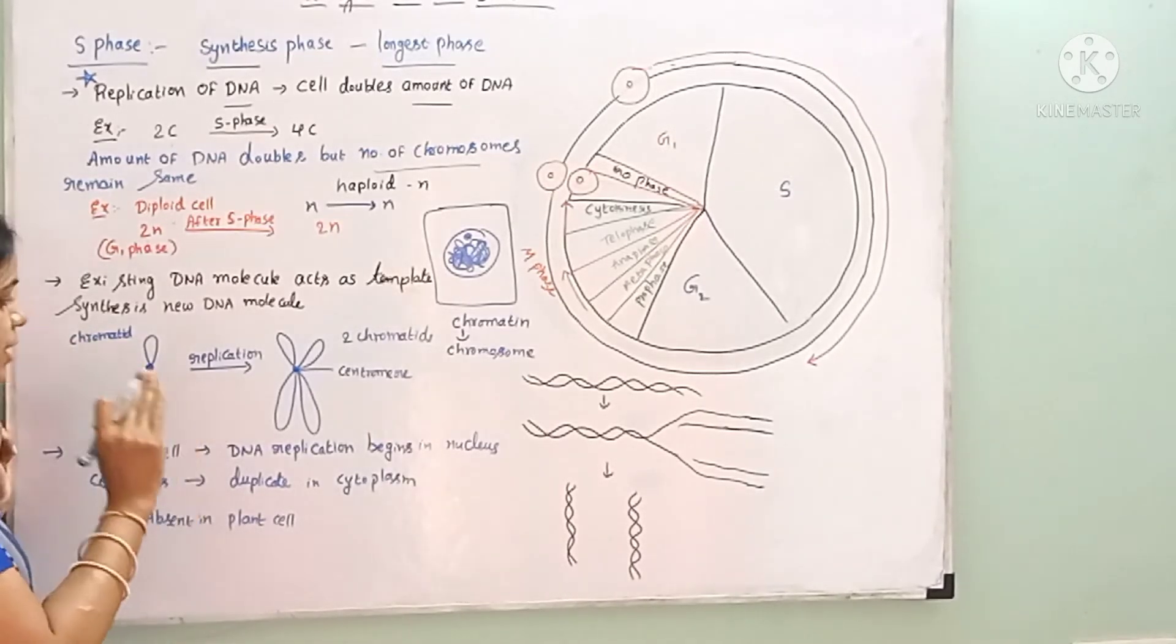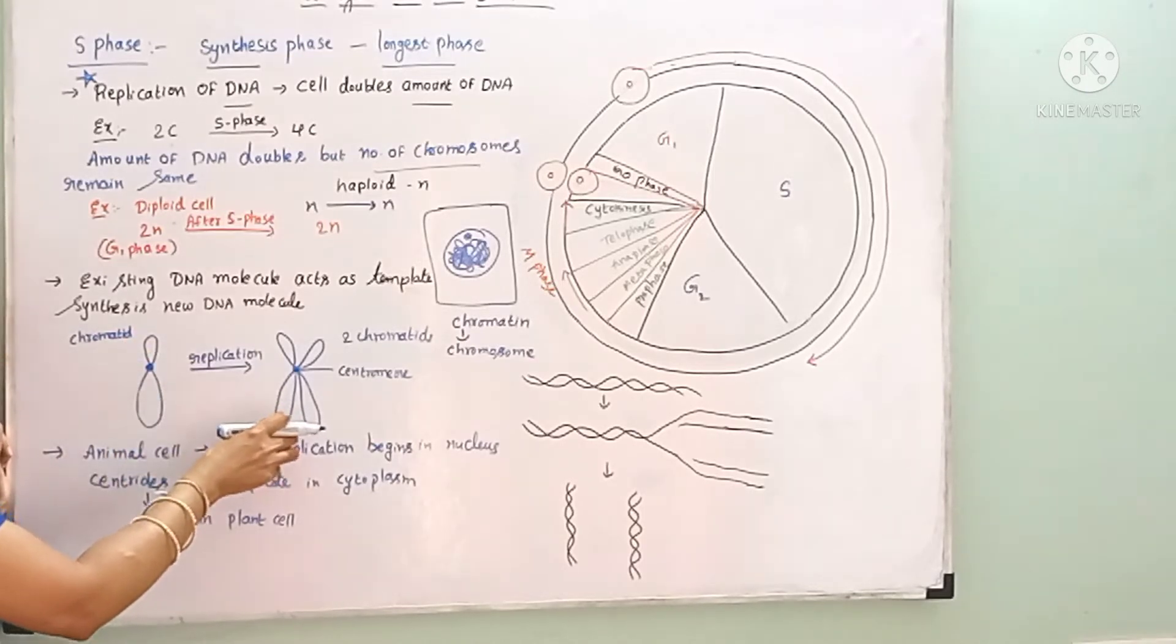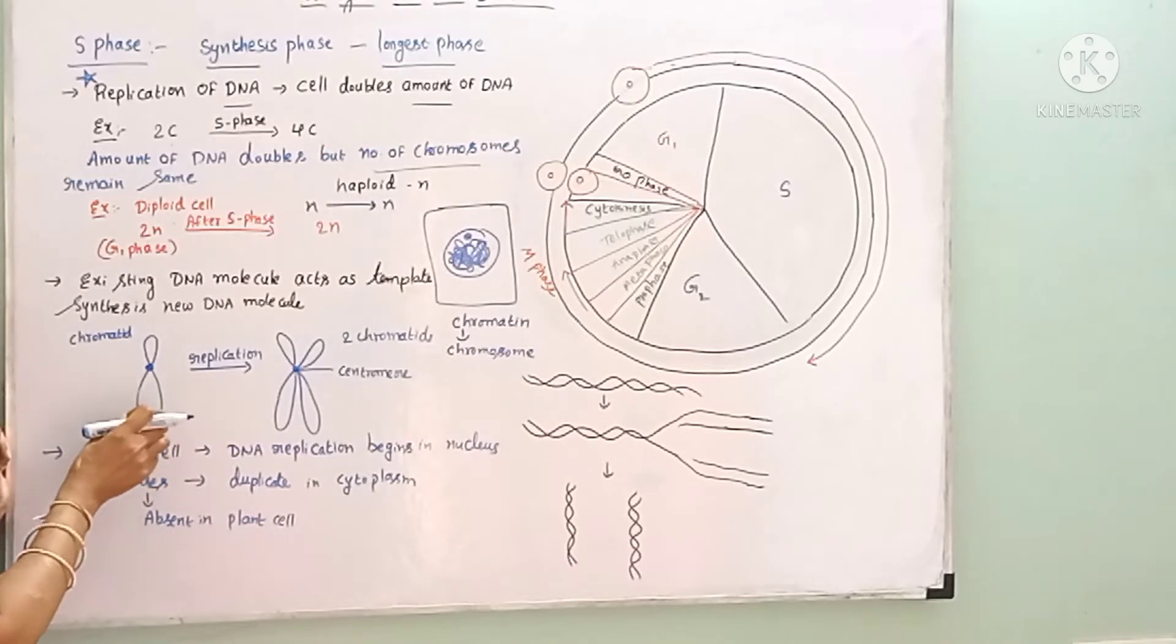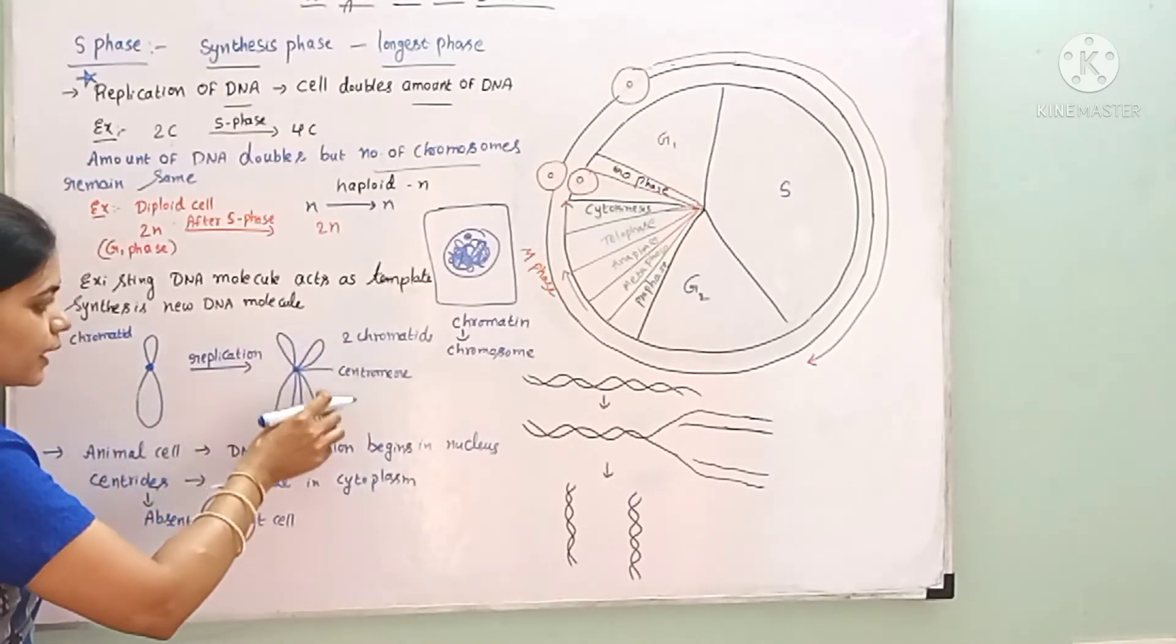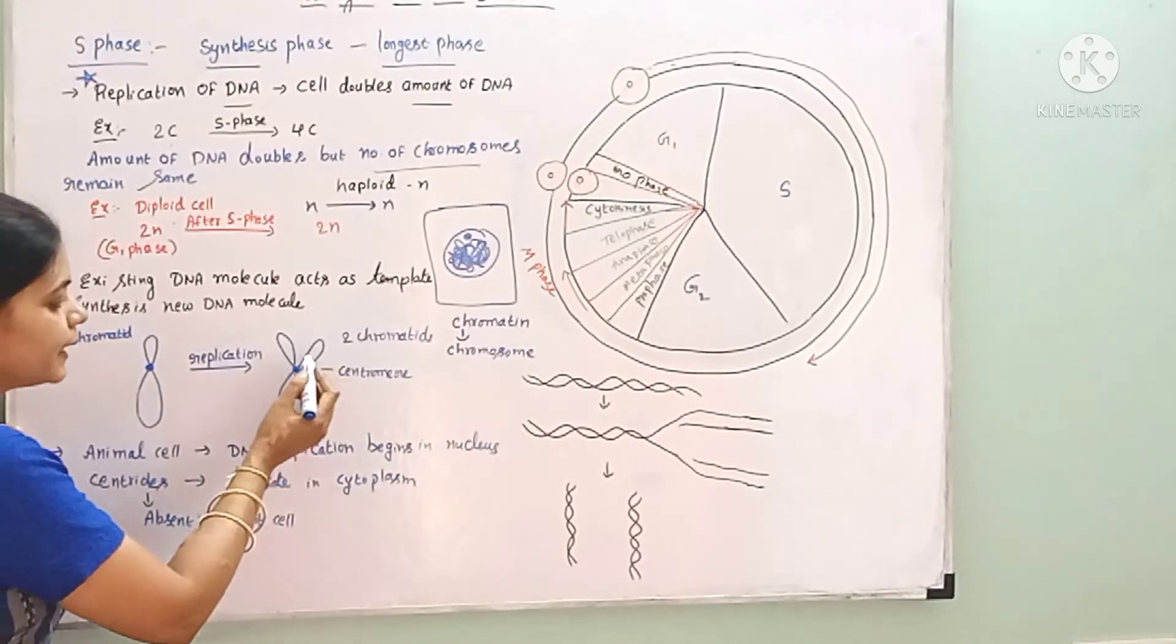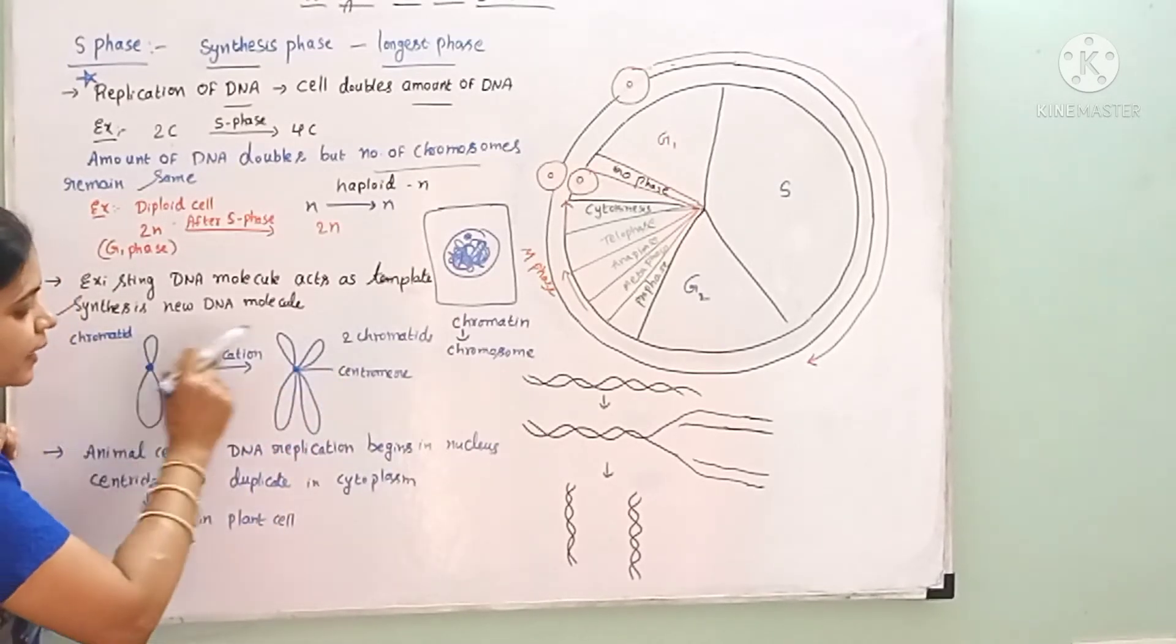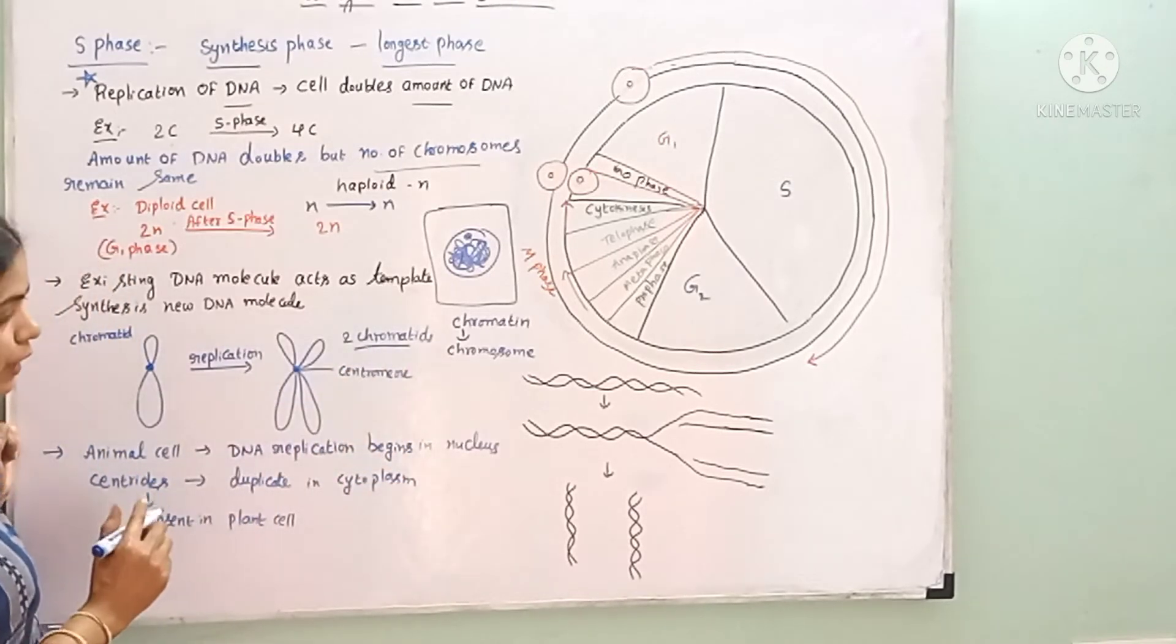Before replication, we have a chromosome structure with one chromatid and a centromere in the center. After replication, the chromosome will have two sister chromatids.